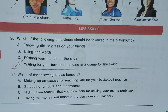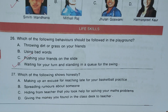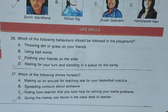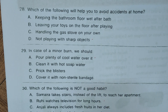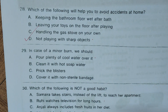Question 27: Which of the following shows honesty? A) Making up an excuse for being late to basketball practice, B) Spreading rumors about someone, C) Hiding from your teacher that you took help solving your math problems, D) Giving money you found in class to your teacher. Question 28: Which of the following will help you avoid accidents at home? D) Not playing with sharp objects. Answer is D.